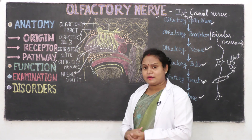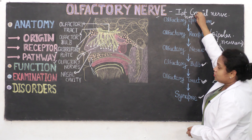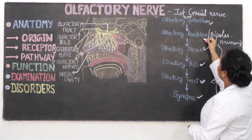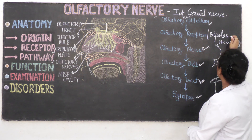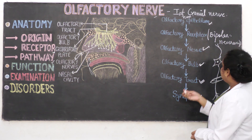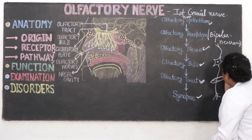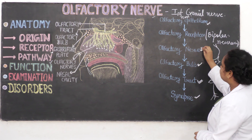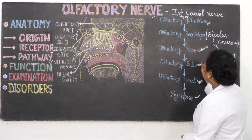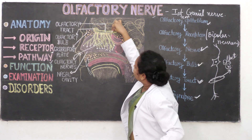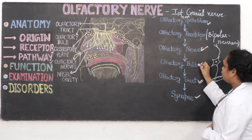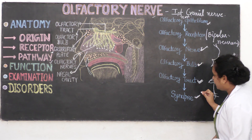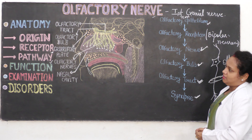Let us review the pathway briefly: Nose → olfactory epithelium → olfactory receptors (bipolar neurons) → axons combine to form olfactory nerve → olfactory nerve travels in bundles and crosses the cribriform plate → reaches the olfactory bulb → forms olfactory tract → synapses and transmits information to the brain.